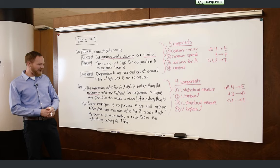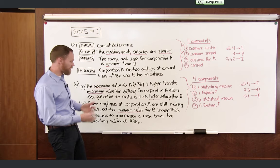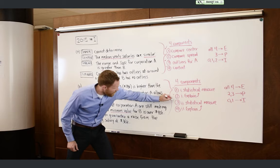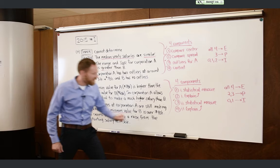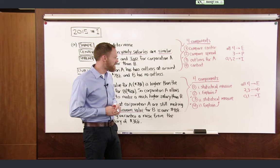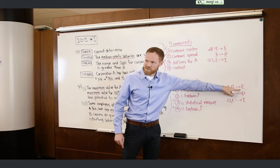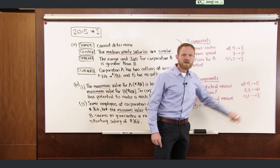For component three, in Part II, we need a relevant statistical measure — the minimum value. At corporation A, the minimum was $36,000, the same as the starting salary. Component four: explain why that's important — corporation B seems to guarantee a raise, whereas at corporation A you might not get one. For Part B, you need all four components for essentially correct, two or three for partially correct, and zero or one is incorrect.